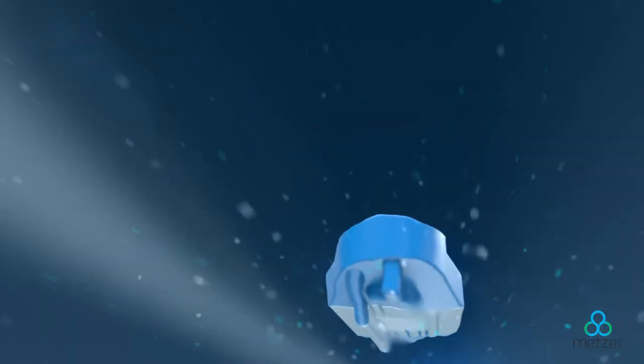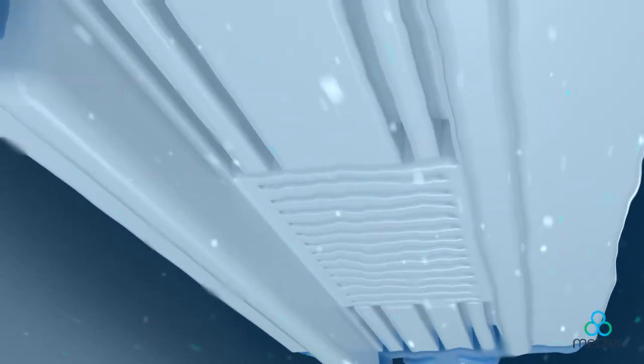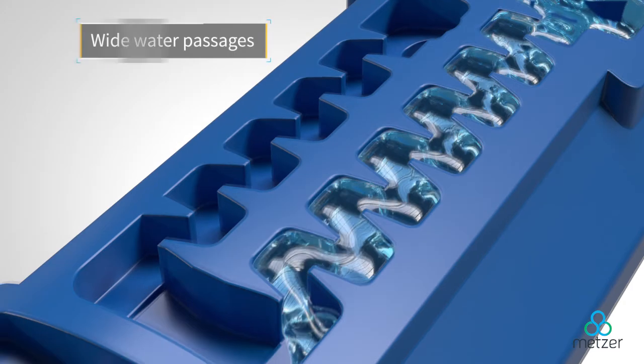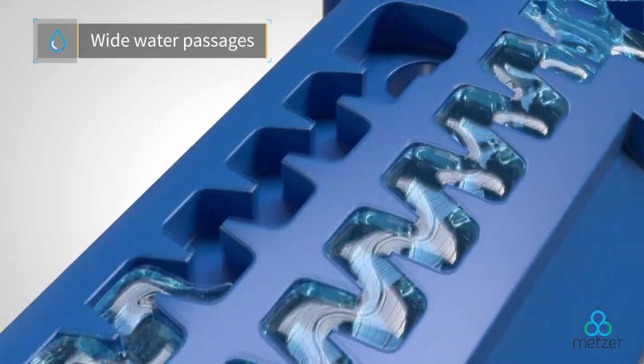Designed for row crops, orchards, landscaping, and more, the Varid PC Dripper's labyrinth mechanism includes wide water passages to provide a turbulent flow pattern.